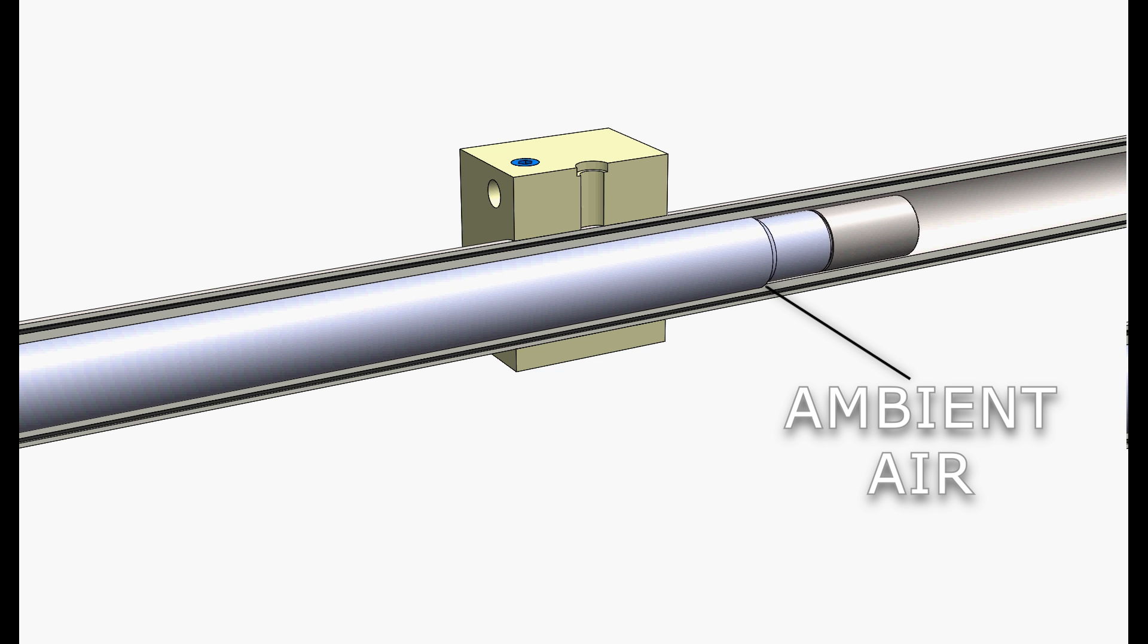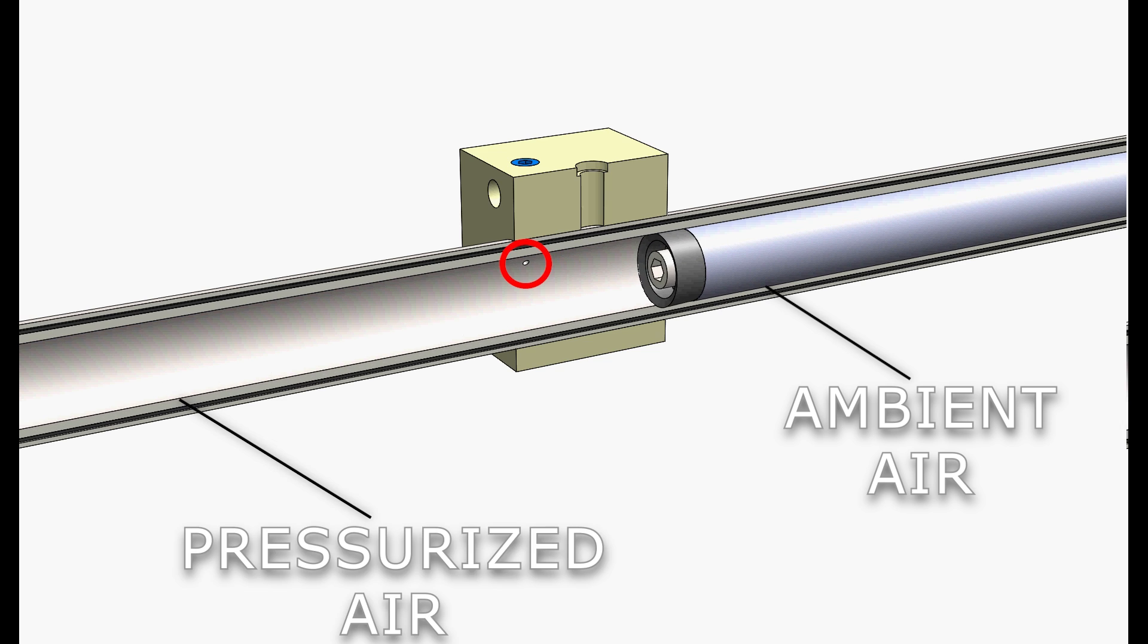While the piston is still pushing the bar stock, the sensor is exposed to ambient air. When the piston reaches the end of its stroke and all you have left is a remnant, the piston seal will pass the cross drilled hole. The sensor is then exposed to pressurized air, and this is how the machine knows you've reached the end of the bar.